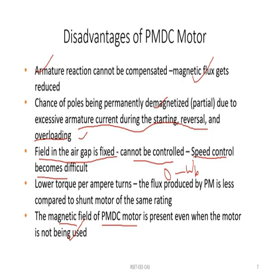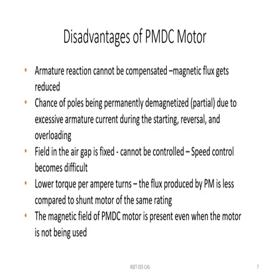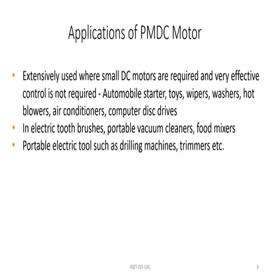Applications of permanent magnet DC motors: these motors are used where small-rated DC motors are required and where precise speed control is not needed — for example, in toys, wipers, washers, air conditioners, portable vacuum cleaners, food mixers, and portable electric tools such as drilling machines and trimmers.